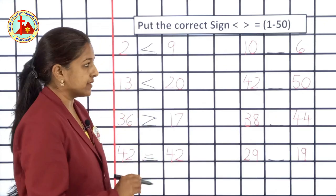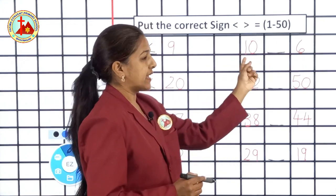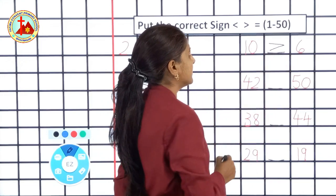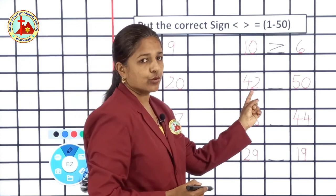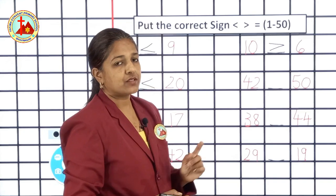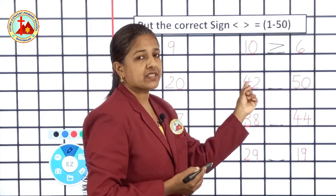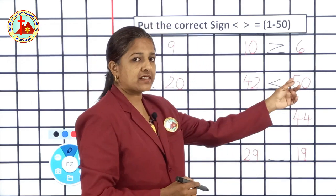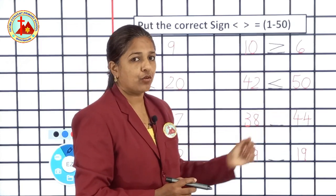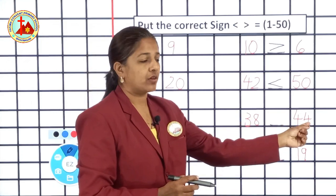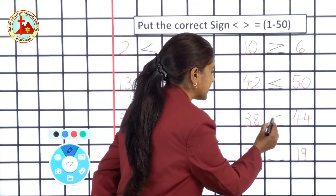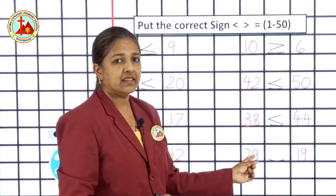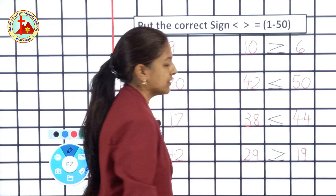Equal to — two slanting lines. Next, number 10 and number 6. 10 is greater than number 6. 10 is the bigger number, so greater than sign. Next, numbers are 42 and 50. 42 is the lesser number, so lesser than sign. 50 is the bigger number. Next, 38 and 44. 38 is lesser than 44. 44 is the bigger number, so lesser than sign. Next, numbers are 29 and 19. 29 is the greater number, so here greater than sign.